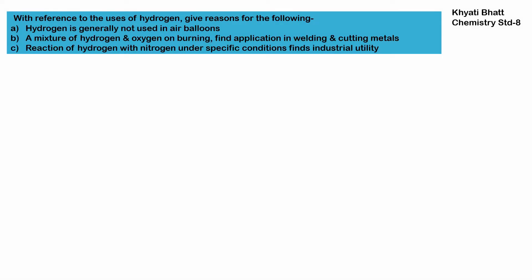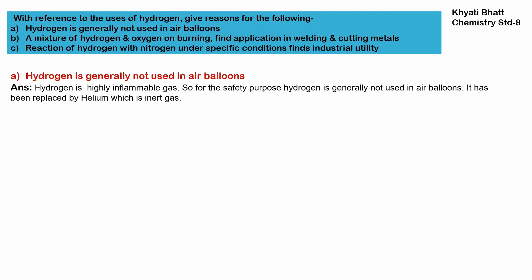Our question is, with reference to the use of hydrogen, give reason for the following. First reason: hydrogen is generally not used in air balloons. The answer is that hydrogen is a highly inflammable gas, so we do not use it in air balloons, as it can be dangerous. Nowadays, hydrogen has been replaced with helium gas, which is an inert gas.